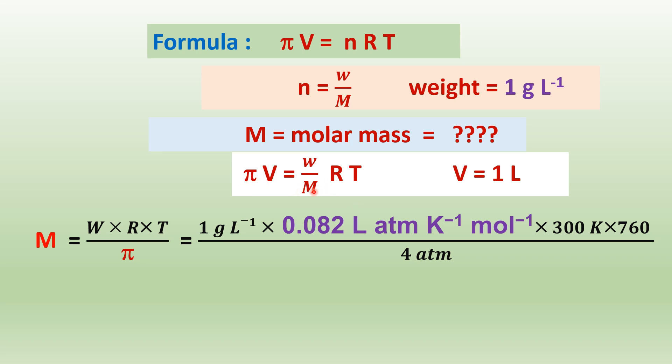We will rearrange to solve for M. Therefore, M equals W times R times T divided by π times V. So W equals 1 gram per liter, R equals 0.082 liter atmosphere kelvin per mole, let us also put the units alongside so they will be cancelled. T equals 300 Kelvin and π equals 4 divided by 760 atmosphere.